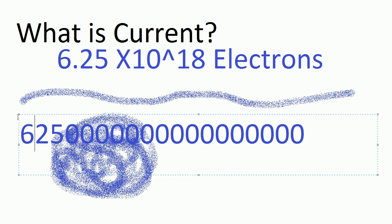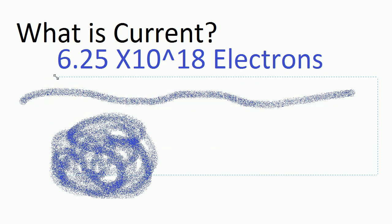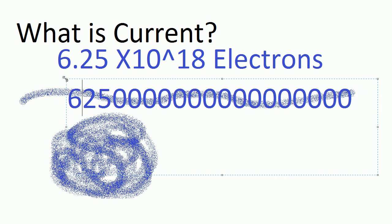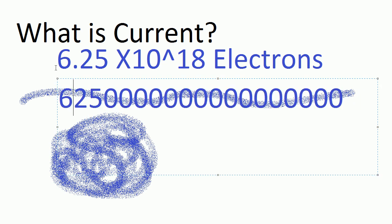Okay, so that number that you see there, that is the number of electrons that are involved in one amp per second.